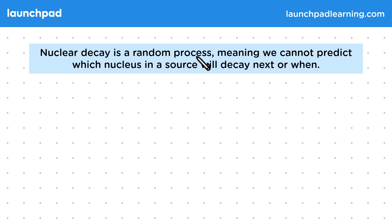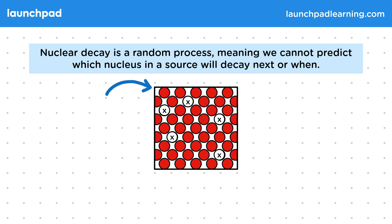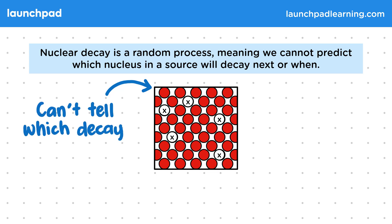Nuclear decay is a random process, meaning we cannot predict which nucleus in a source will decay next or when. Here we have a sample where some nuclei have decayed, and we can't tell which will decay next as all appear the same until they decay. We also can't tell exactly when the next nucleus will decay, as this happens when one feels like decaying.